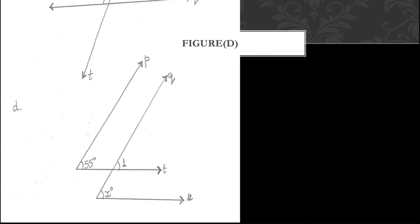Now let us move on to part D. Here we have parallel lines P and Q and transversal T. To solve this, I extend lines P and Q as well as the transversal so the figure is clearly visible. The measurement given is 55 degrees on the top interior angle. By extending the figure, we can now clearly see the parallel lines and identify the angle relationships.